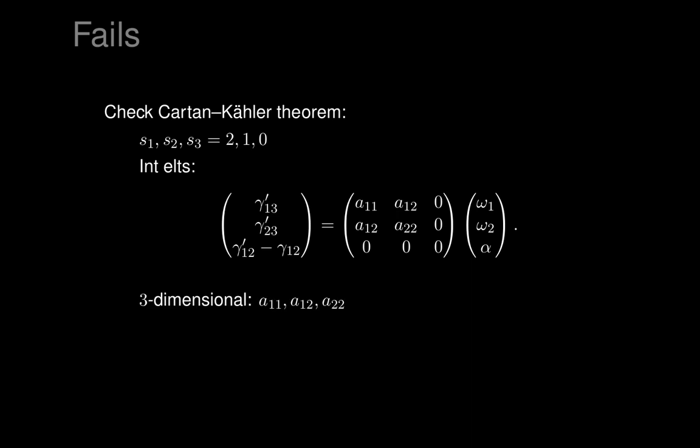So it's a three-dimensional family of integral elements at each point, given by those choices of those three components. We're on a manifold whose dimension you can check by computing the dimension of the product frame bundles. And you find that S1 plus 2·S2 equals four, and it's bigger than three, so Cartan-Kähler fails.